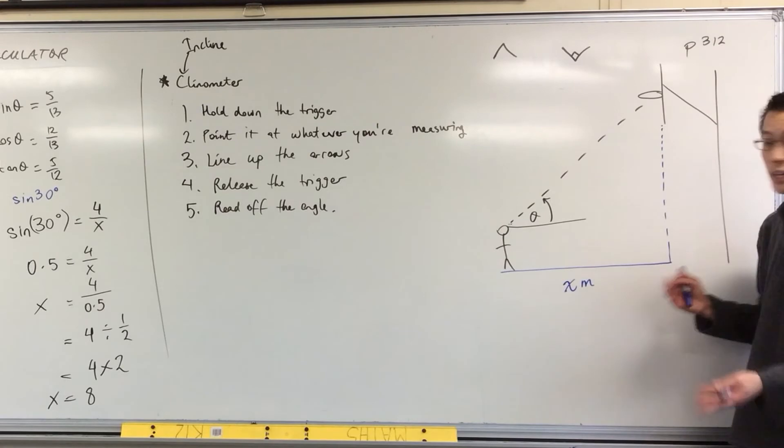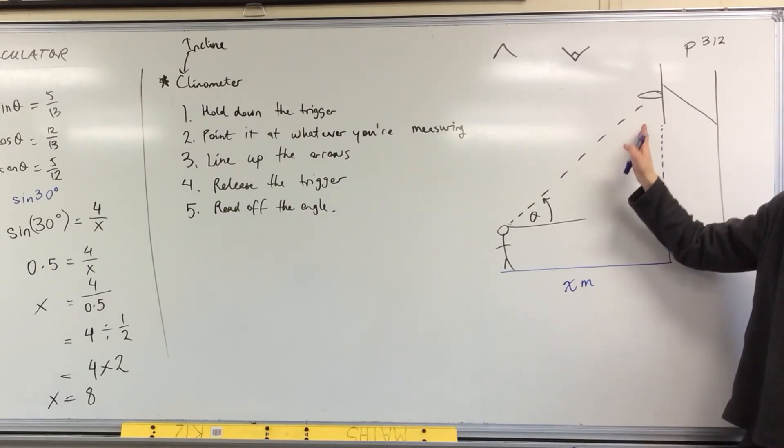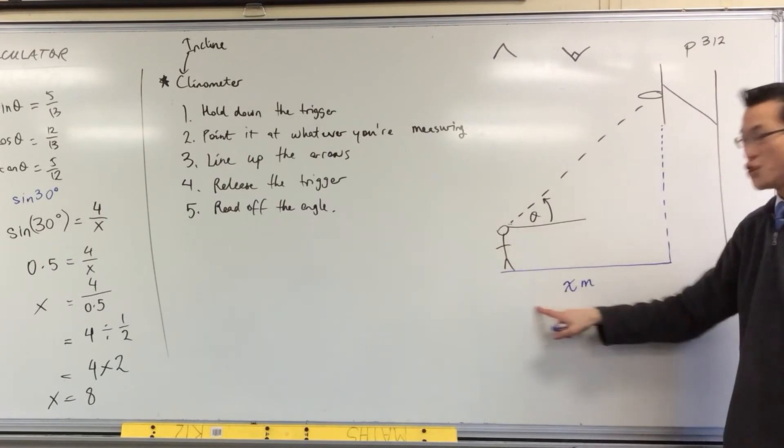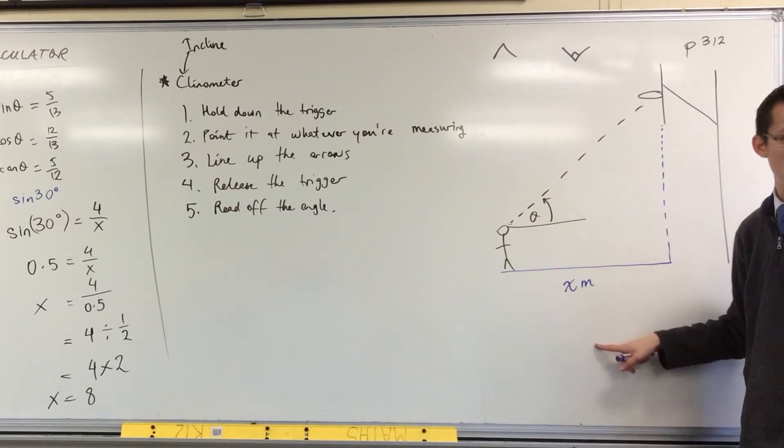So here's what you're going to do. You're going to pick an object. You'll measure its angle, and from that spot where you're standing, you want to measure that distance as well.